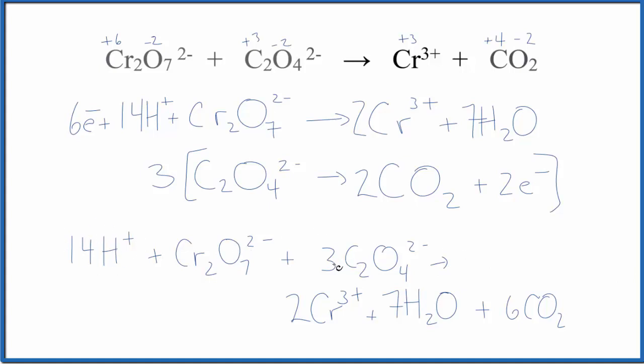If we look at the charge, we have 14+ minus 2, that's 12+ minus three times 2-, so minus 6. Total of 6+ on this side. In the products, two times 3+ is 6+. If you count the atoms, they're balanced as well.